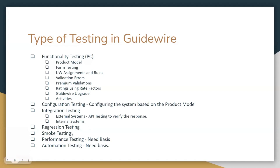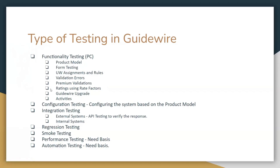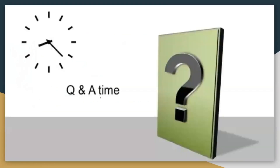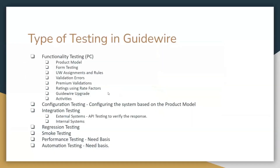Additional testing types performed on projects include regression testing, retesting, smoke testing, sanity testing, performance testing, and automation, performed as needed. In real-time projects, not everything is applicable — it is limited. Some projects deal only with the product model, some only with rate factors, and some only with forms and documents. Due to this variation, all areas have been covered in training, but most parts will be addressed as part of the PolicyCenter training.